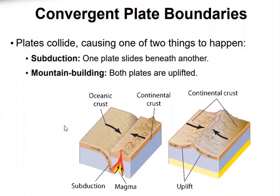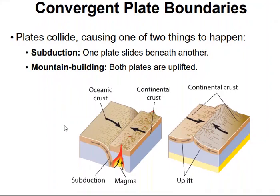Convergent plate boundaries occur when plates collide. One of two things will happen: one plate of crust may slide beneath another in a process called subduction. The subducted crust is heated as it dives into the mantle and may send up magma that erupts through the surface in volcanoes. Mount St. Helens in Washington, which erupted badly in 1980 and became active again in 2004, is fueled by magma from this subduction process. You can see a great diagram of subduction right here.